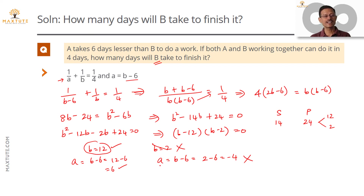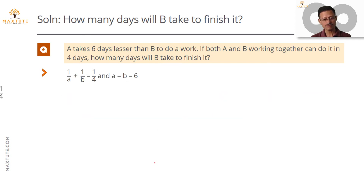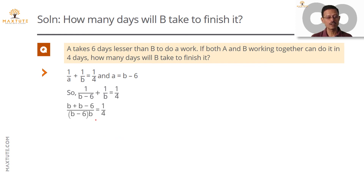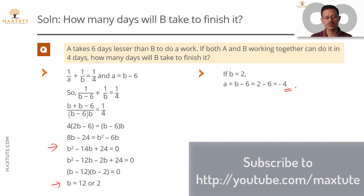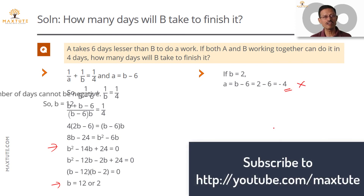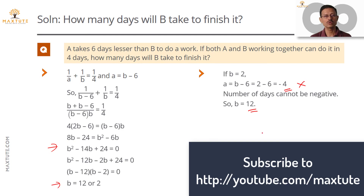Let's quickly recap the solution. We substituted A as B minus six into the combined work equation. Taking B(B minus six) as the common denominator and cross-multiplying gives eight B minus twenty-four equals B squared minus six B. Taking all terms to one side yields the quadratic B squared minus fourteen B plus twenty-four equals zero. Solving gives B equals twelve or B equals two. Since B equals two makes A equal to minus four, which is infeasible, the only valid answer is B equals twelve days.